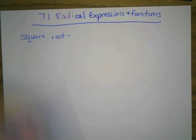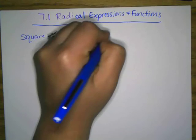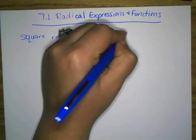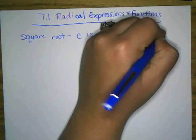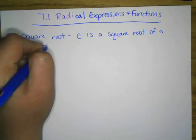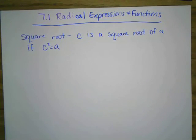The first thing we're going to talk about is square roots. And you all know C is a square root of A if C squared equals A. And that's how you would solve for C in this case. To undo the squared, you would square root both sides.